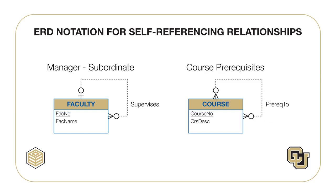Self-referencing relationships occur in a variety of business situations. Any set that can be visualized as a hierarchy can be represented as a self-referencing relationship. Typical examples include hierarchical charts of accounts, genealogical charts, part designs, and transportation routes. In these examples, self-referencing relationships are an important part of the database. It is important to distinguish between one-to-many and many-to-many self-referencing relationships.